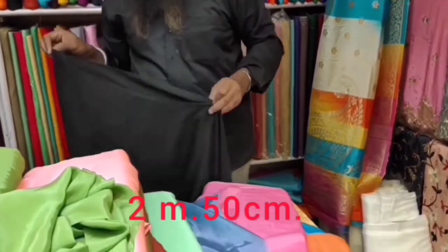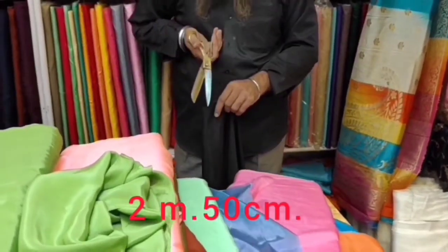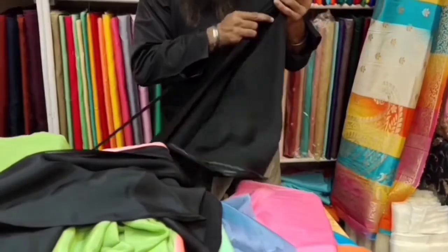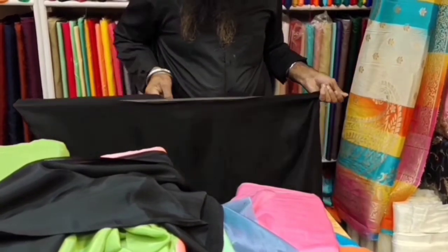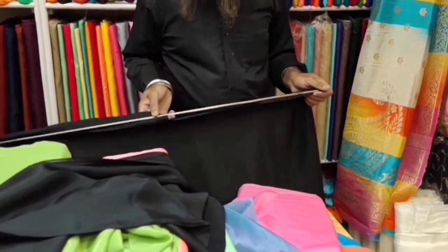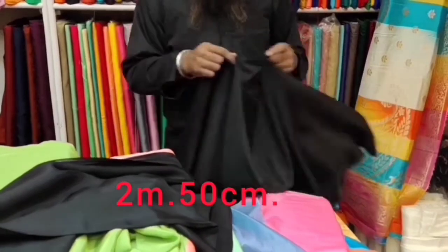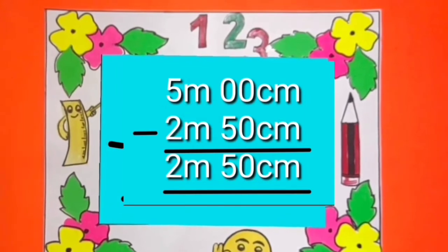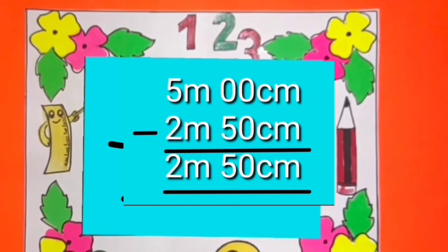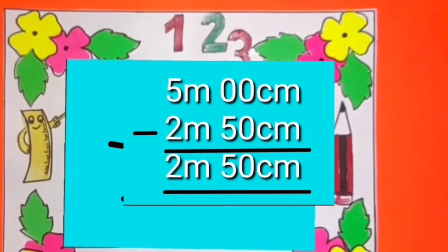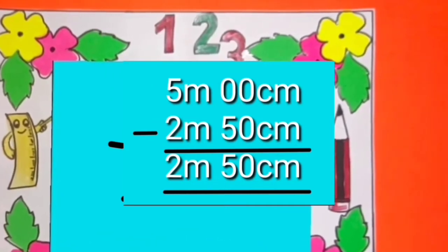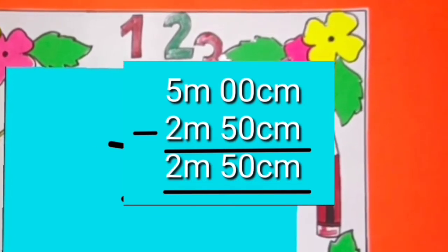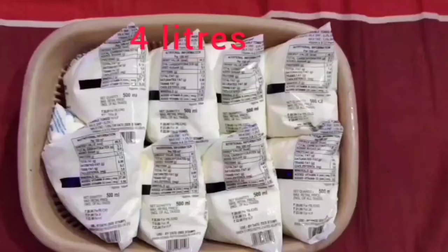Dear students, when we cut 2 meters and 50 centimeters of cloth out of 5 meters of cloth, with how much cloth are we left with? We are left with 2 meters and 50 centimeters of cloth. Now we will solve this sum in a mathematical way. We will write meters under meters and centimeters under centimeters. After subtracting 2 meters 50 centimeters from 5 meters, we get 2 meters and 50 centimeters.